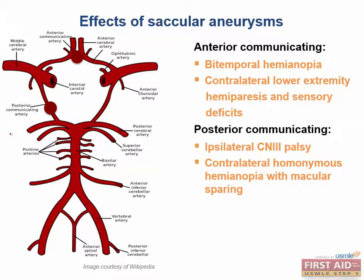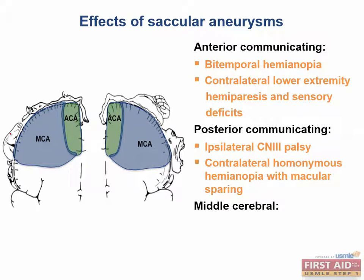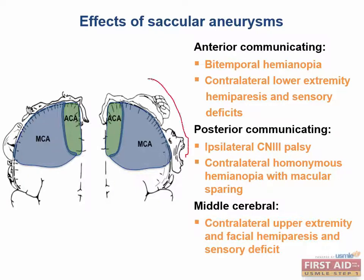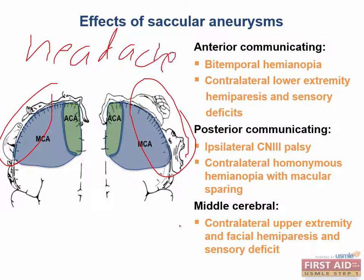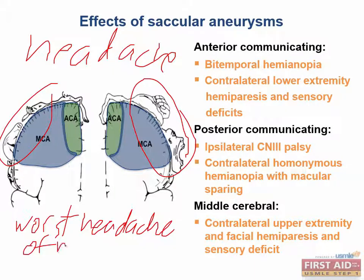An aneurysm causing ischemia in the MCA distribution — remembering the homunculus — would lead to sensory and motor deficits in the upper extremities as well as the face. Just for review, what is the most common complaint of a patient with a ruptured aneurysm? Remember the story — moments before she died, she expressed how bad her headache was. With aneurysms, patients will often say they are having the worst headache of their life. This is not only a clue in clinical practice, but it's also a very useful cue on the boards.